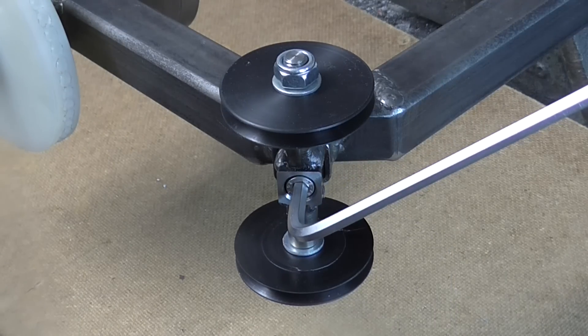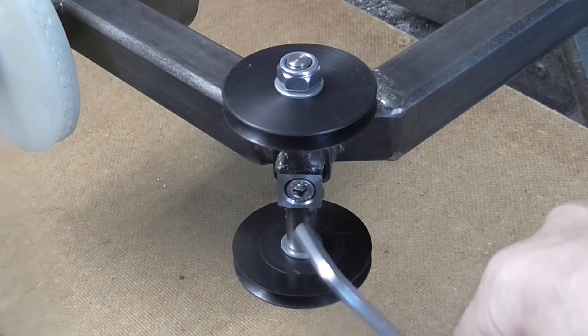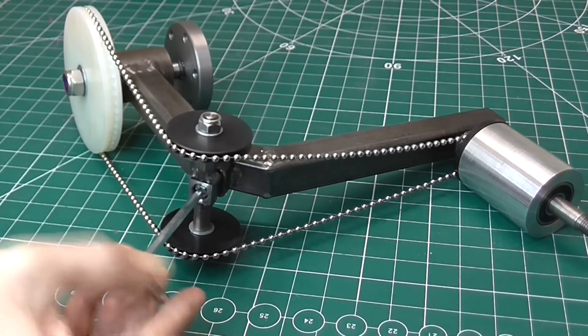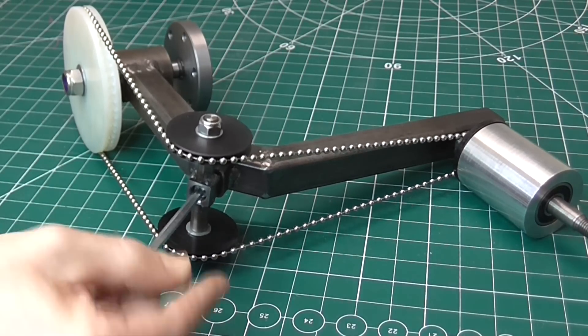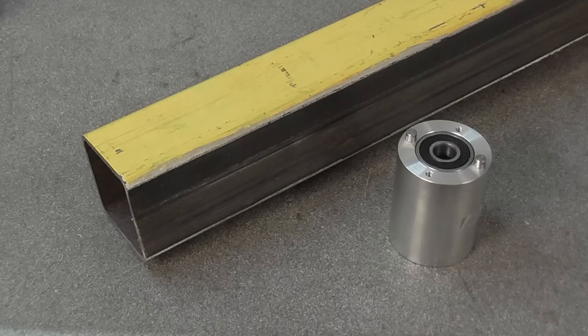The bolt adjusts the tension. Not much is needed, just enough to take up the slack and keep the chain on the wheels. Now the arm is complete I can start on the frame.